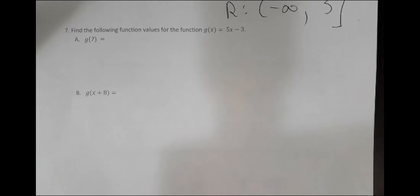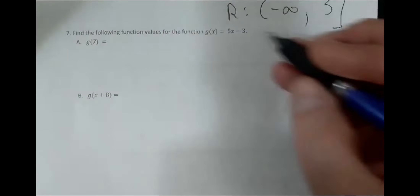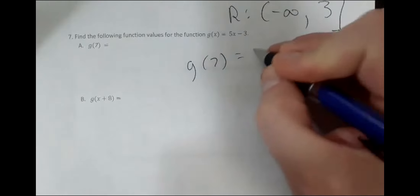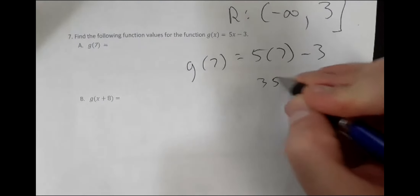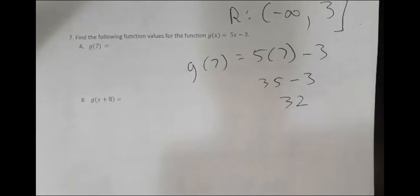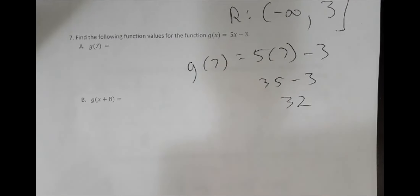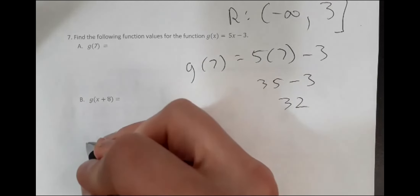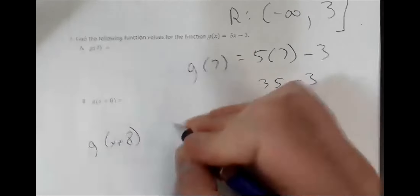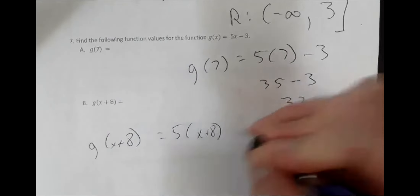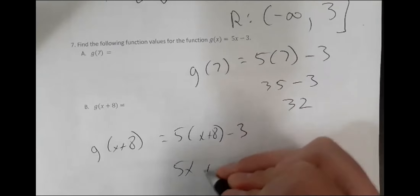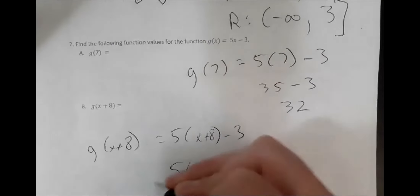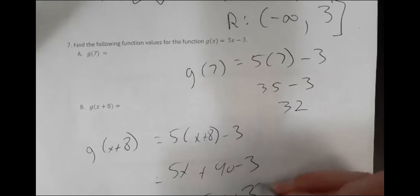Problems seven and eight — I was pleasantly surprised, most people got these right. G of 7 equals 5 times 7 minus 3, which is 35 minus 3, equals 32. For g of (x + 8), plug x + 8 into the function: 5(x + 8) minus 3 equals 5x + 40 minus 3, which is 5x + 37.